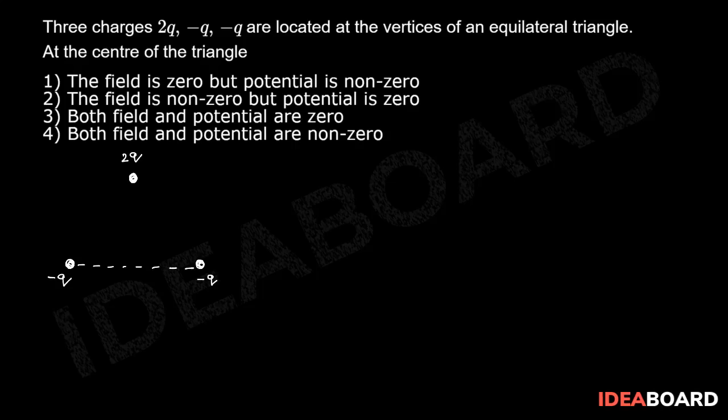These three are kept at the three vertices of an equilateral triangle. The distance from the center to the corner is R. This is the direction of the electric field, which is always towards the negative charge and away from the positive charge. So obviously...